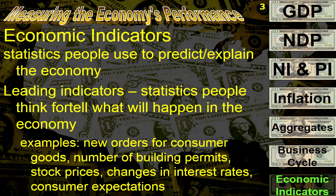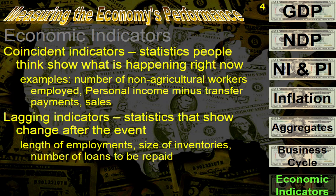But what is going on in the economy right now? That's where we run into what's called coincident indicators — statistics that show people what's happening right now. For example, how many people are actually employed? What is the personal income right now? What are the sales right now? Those numbers have significance as to what's happening in the economy as they are being created.